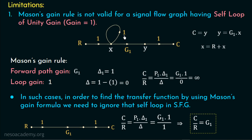We know that a self-loop of unity gain is an invalid loop. But what if the gain of the loop is equal to minus 1? Will that be a valid or invalid loop? Let us check this in the next slide.